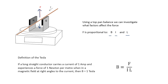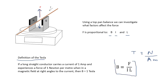This leads us to the definition of the Tesla. We define the Tesla as: if the force is one Newton and the current is one amp on one meter of wire, then it's one Tesla. So B equals F over IL, meaning a Tesla is equivalent to a Newton per amp meter. Just as gravitational fields are measured in Newtons per kilogram and electric fields in Newtons per Coulomb, magnetic fields are measured in Newtons per amp meter — or Tesla, or Webers per meter squared.